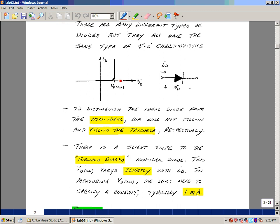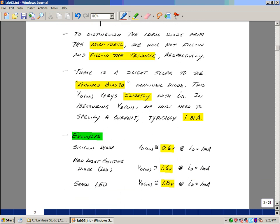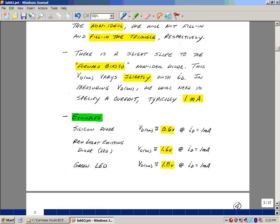So when you measure VD on, it's usually given at a specific value of current, and that's because there's a little bit of a slope here. Some typical values for a silicon diode, if you measured it at one milliamp, would be about six tenths of a volt. Now this is not exact; it would depend on the size of the diode. A red light-emitting diode might be about 1.6 volts at one milliamp of current, and a green LED about 1.8.